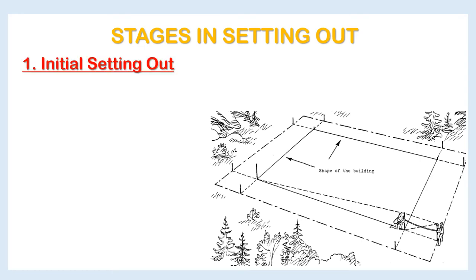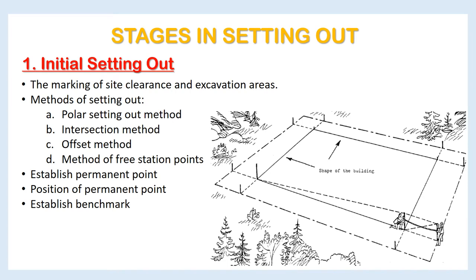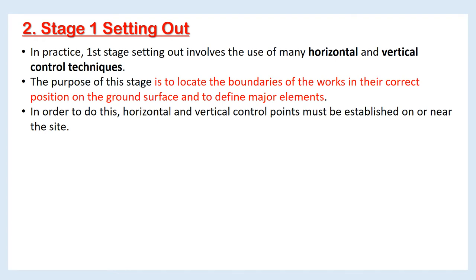Initial setting out involves the marking of site clearance and excavation areas. Four methods of setting out are: Polar setting out method, Intersection method, Offset method, and Method of free station points. Initial setting out also establishes permanent points, positions of permanent points, and benchmarks. Stage 1 setting out involves the use of many horizontal and vertical control techniques. The purpose of this stage is to locate the boundaries of the works in their correct position on the ground surface and to define major elements, requiring horizontal and vertical control points to be established on or near the site.